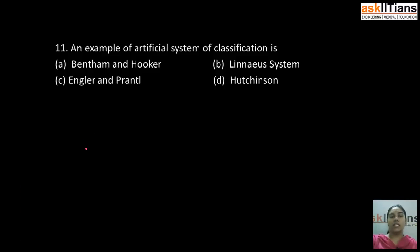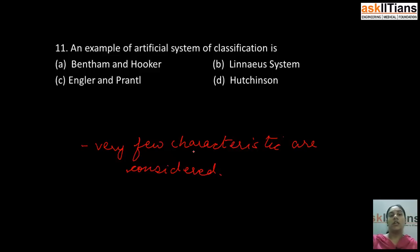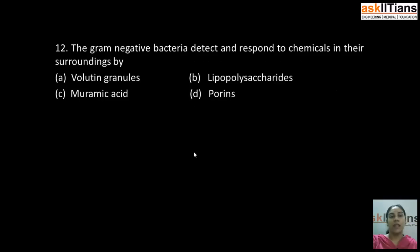Our next question is: an example of artificial system of classification is — A) Bentham and Hooker, B) Linnean system, C) Engler and Prantl, D) Hutchinson. The correct answer is B: Linnean system. Linnaeus proposed the artificial system of classification, in which very few characteristics are considered. Among the other options, Bentham and Hooker proposed the natural system of classification of seed plants, and Engler and Prantl and Hutchinson proposed the phylogenetic system of classification.